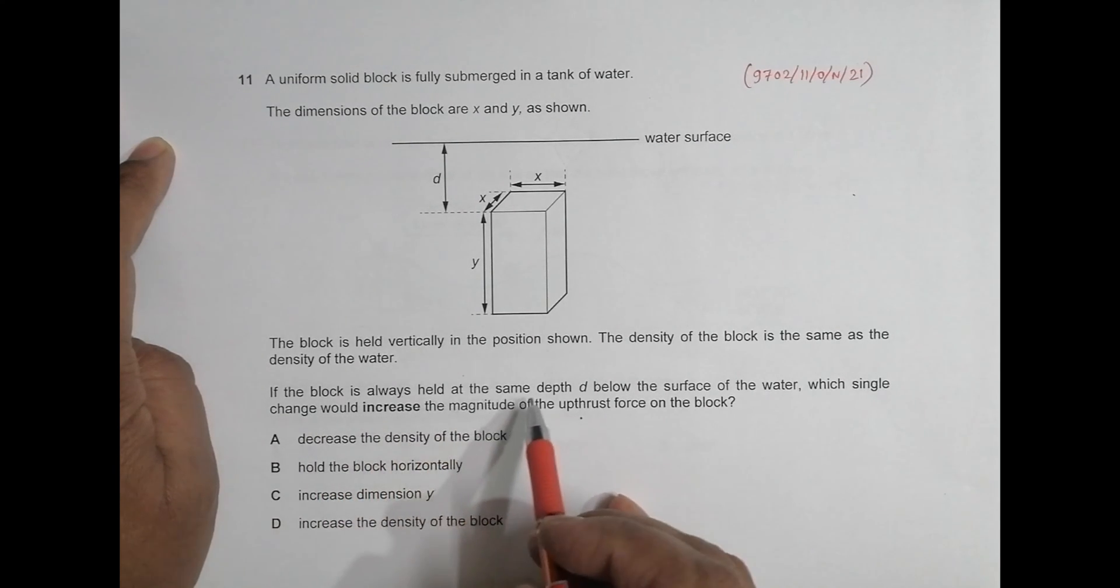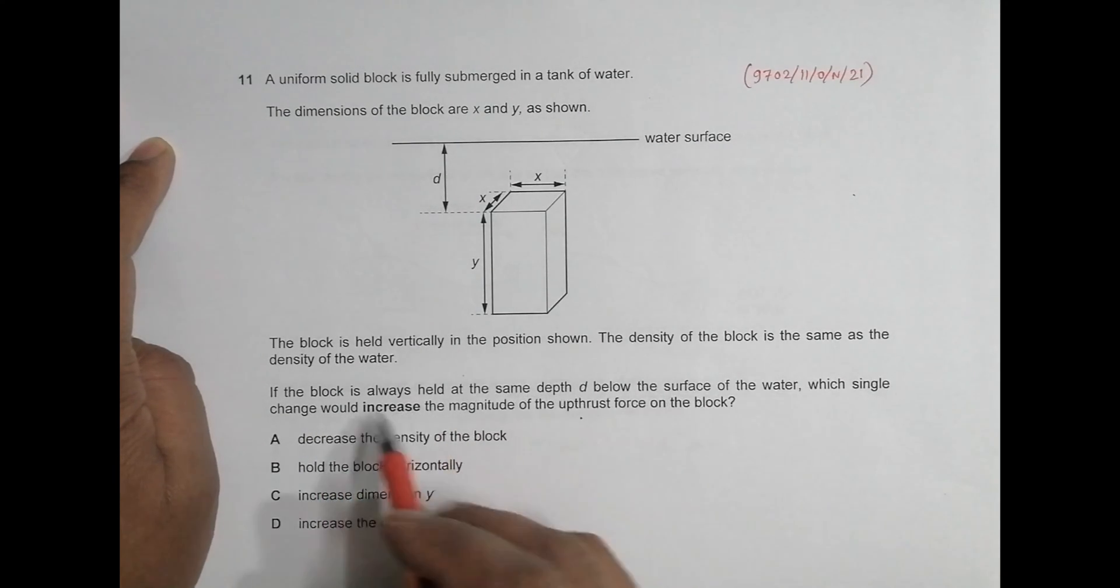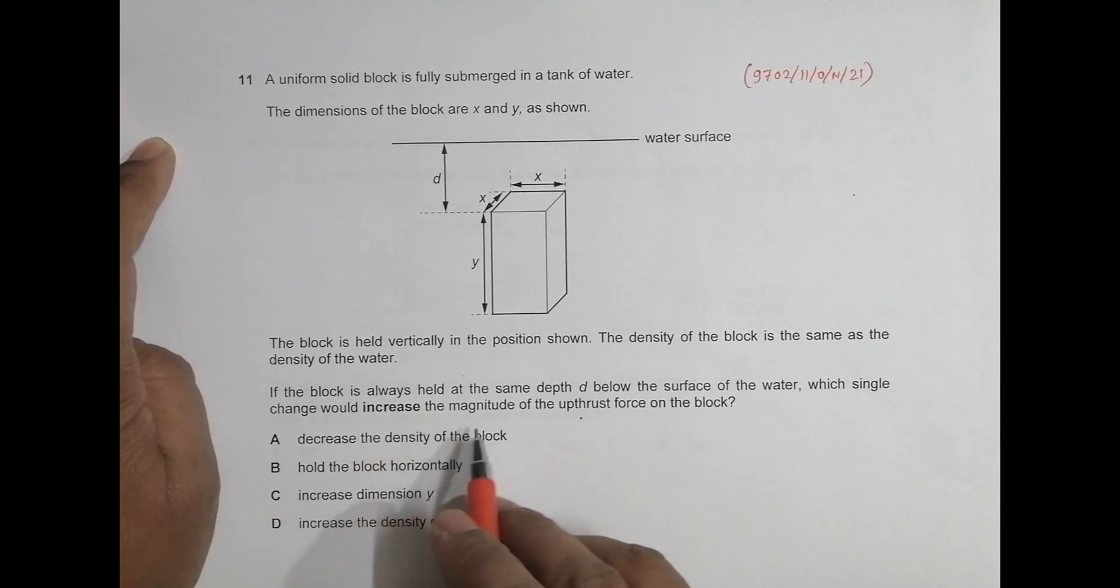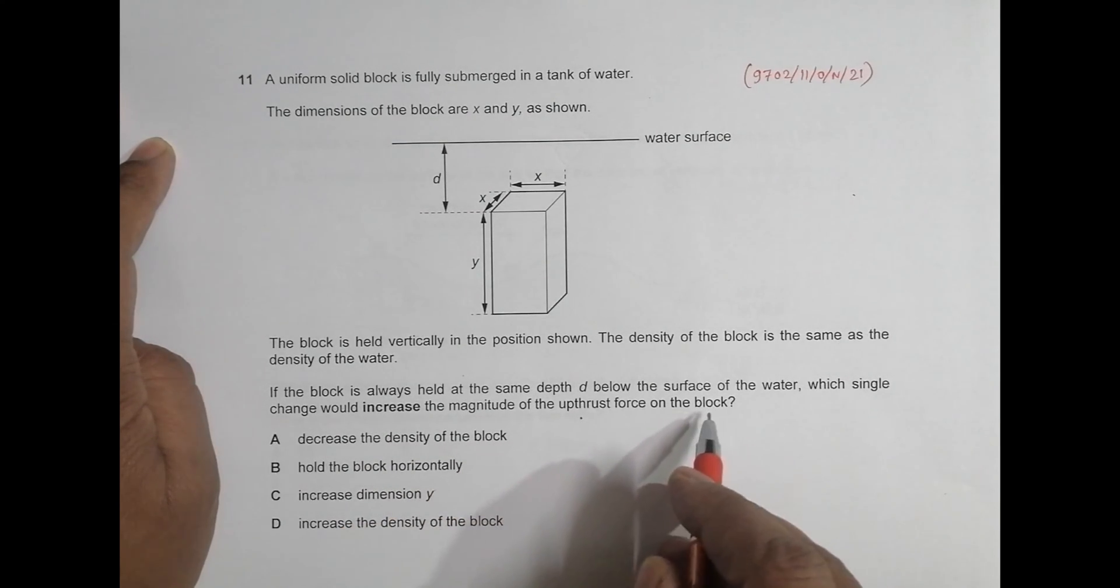If the block is always held at the same depth below the surface of water, which single change would increase the magnitude of the upthrust force on the block. So we have to find a factor which would single-handedly increase the magnitude of upthrust.